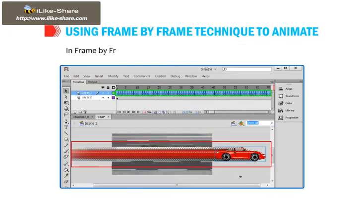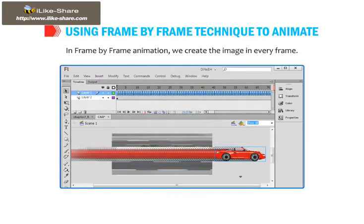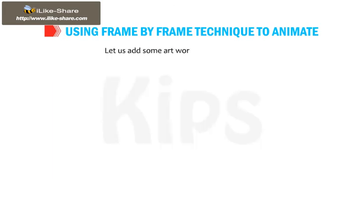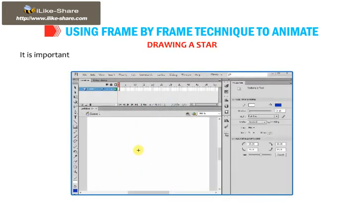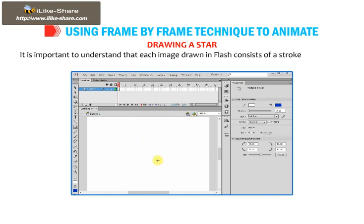In frame-by-frame animation, we create the image in every frame. Let us add some artwork for the document. Draw a star. It is important to understand that each image drawn in Flash consists of a stroke, an outline, and/or a fill.